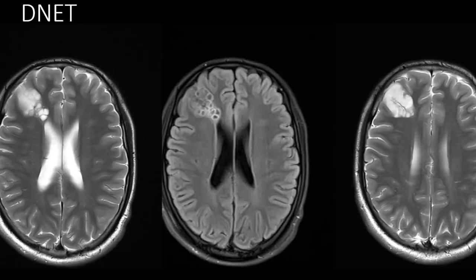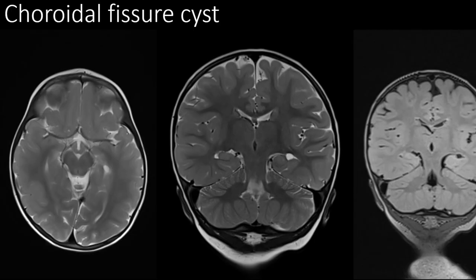Now coming to a few mimics of perivascular spaces. This is a case of DNET or disembryoplastic neuroepithelial tumor. This case shows a cortical-based lesion in the right frontal lobe which appears heterogeneously hyperintense on T2. There is partial suppression of the T2 hyperintense signal on FLAIR — note the evidence of gyral thickening. A choroidal fissure cyst can be made out by its characteristic location: a cystic lesion in the region of the left choroidal fissure abutting the left hippocampus, appearing hyperintense on T2 and suppressing completely on FLAIR, with no mass effect or perifocal edema.